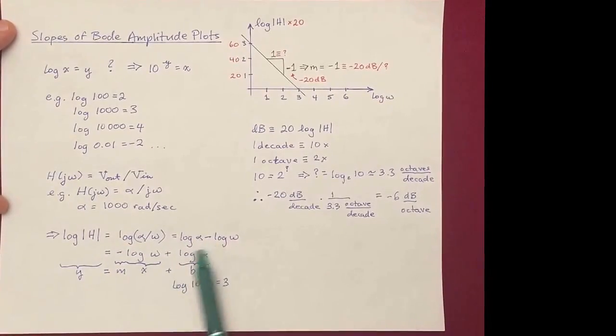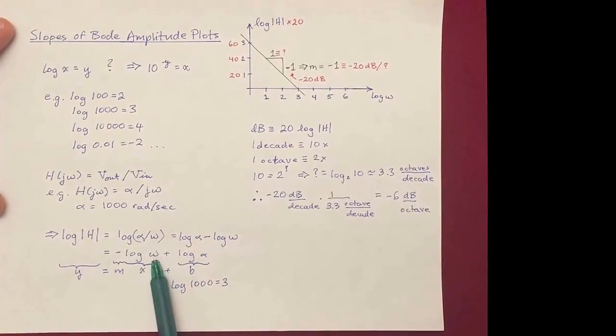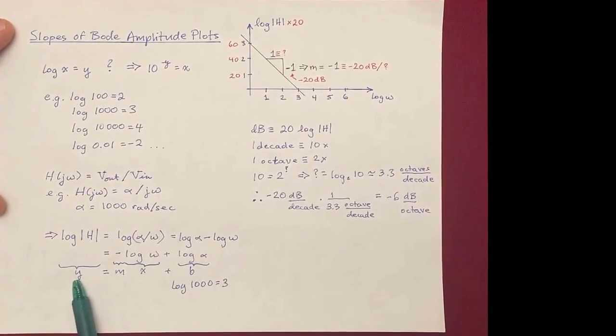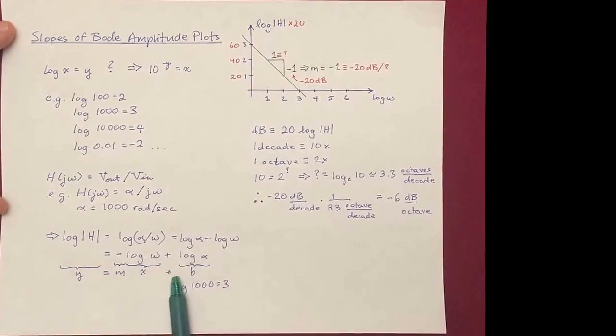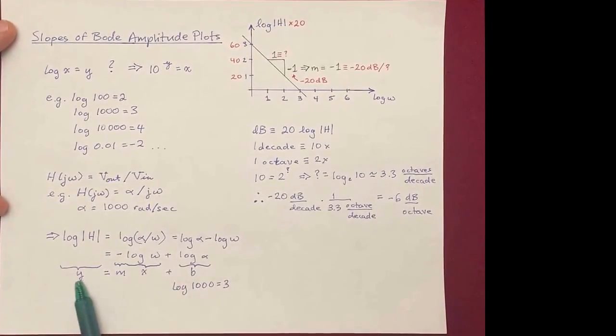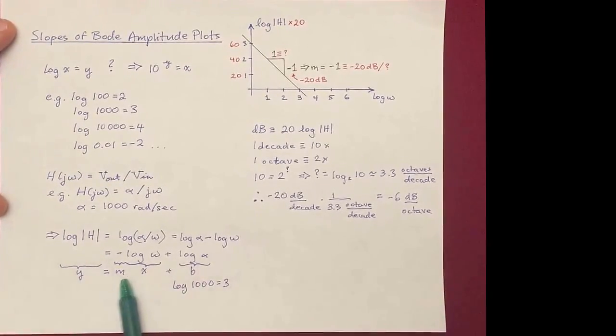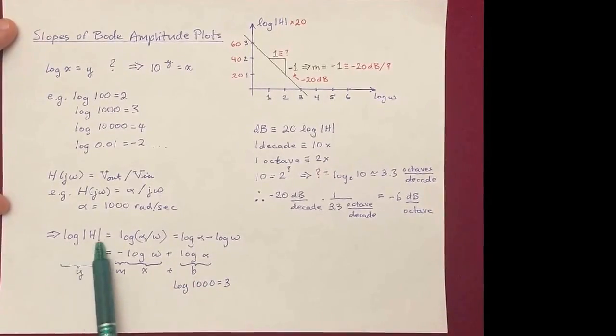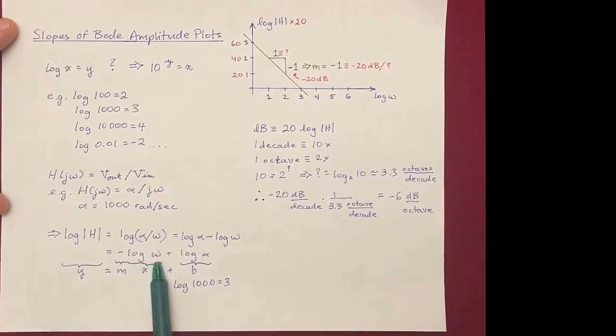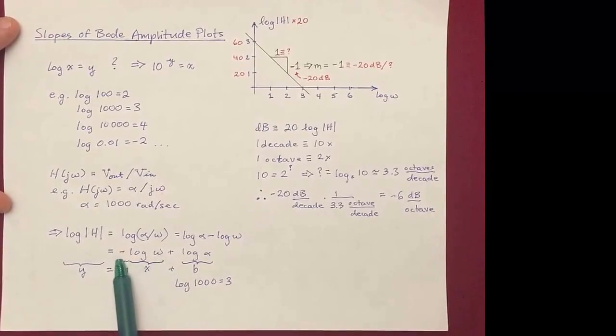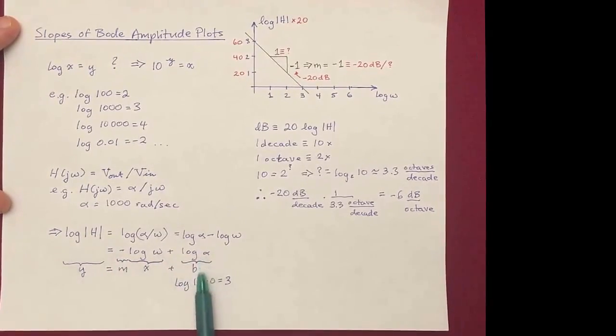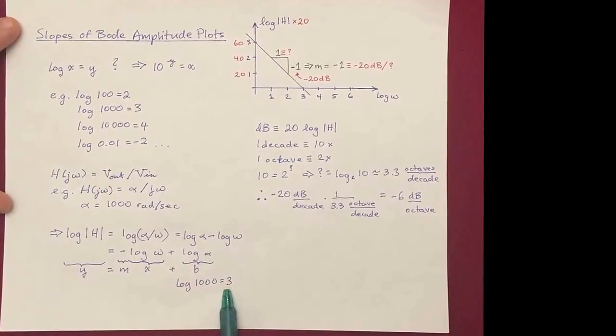Now, we'll rewrite this with the log of omega in front and the minus sign there, and then the log alpha, because that allows us to map it onto the form y equals mx plus b, which is the form for a linear line with slope m and intercept b on a yx axis. So if we choose log h for our y-axis and log omega for our x-axis, then our slope will be minus 1, and our intercept will be the log of alpha, which is the log of 1,000, which is 3.